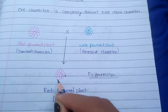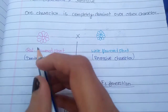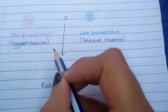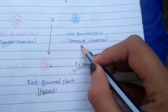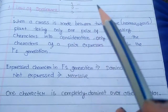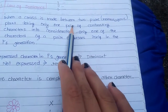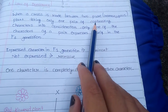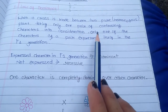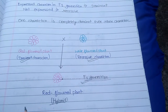This means the dominant character is what we see here, but the white character that we are not seeing is recessive. This is a hybrid red flower plant. The character shown in F1 generation is the dominant character. We have two contrasting characters — red and white — and the F1 generation hybrid shows only the dominant character.